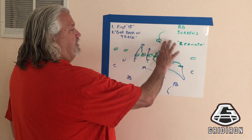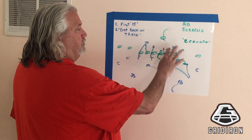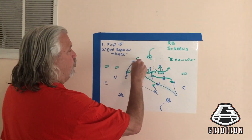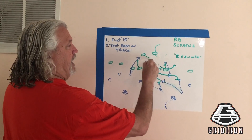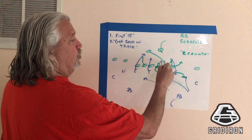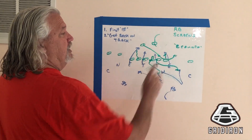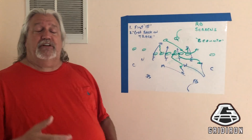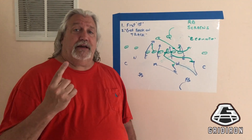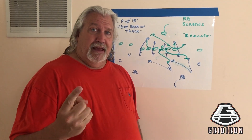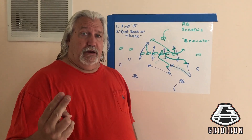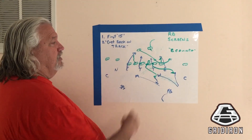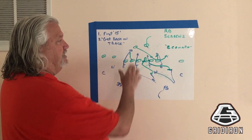The offense will run the exact same play, and they call this an across screen, where this back comes all the way across, shows protection, and runs the exact same play. You have the exact same blocking for the classic screen and for the across screen. So those are two of their favorite screens, and they're blocked identically.